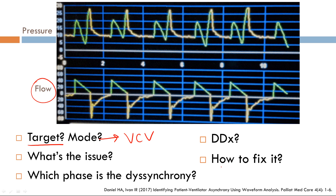The patient is flow starved — they are inspiring excessively during the breath because the flow they are receiving is not enough. For example, if this patient's flow is set to 40 liters per minute, it's not enough. There are two options to fix this.